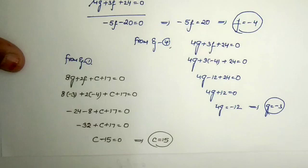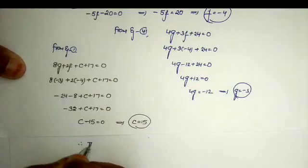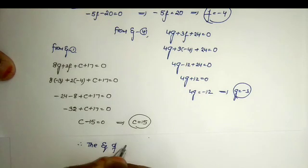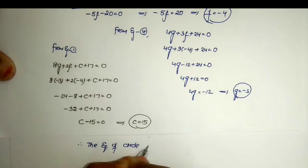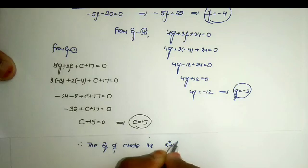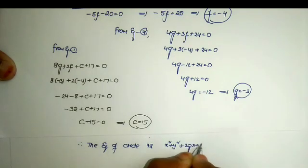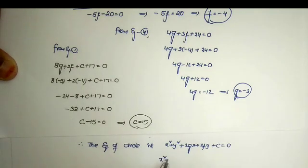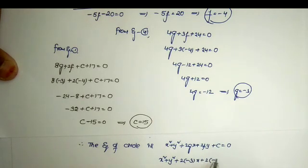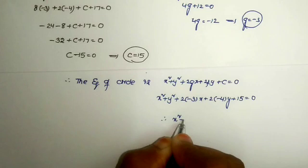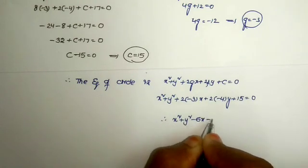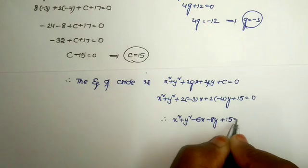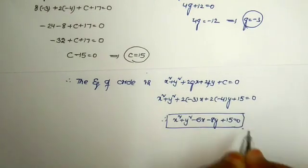Now substituting these three values into the circle equation to get the required answer. The equation of the required circle is x² + y² + 2gx + 2fy + c = 0. Replacing g = -3, f = -4, c = 15: x² + y² + 2(-3)x + 2(-4)y + 15 = 0. Therefore the answer is x² + y² - 6x - 8y + 15 = 0. This is the final equation.